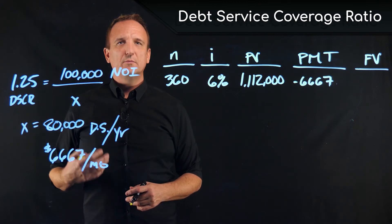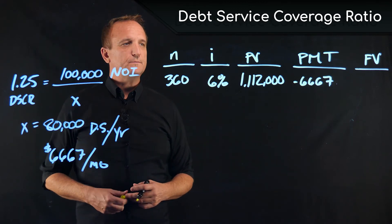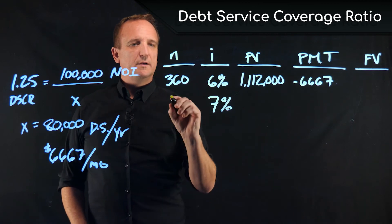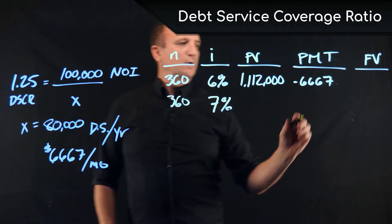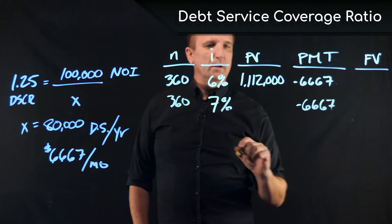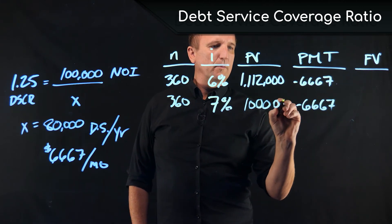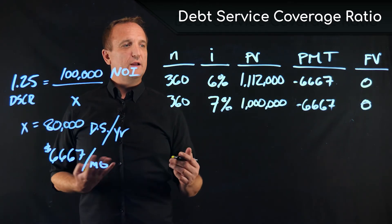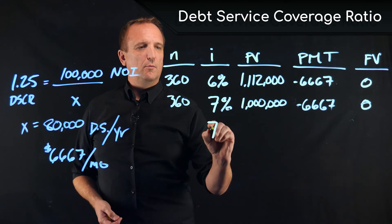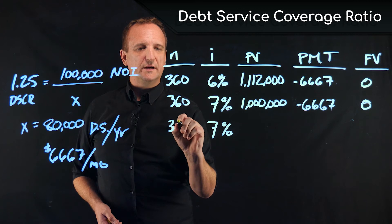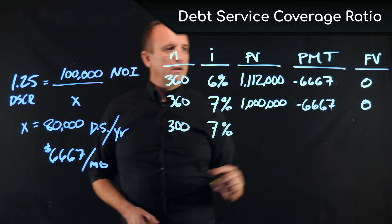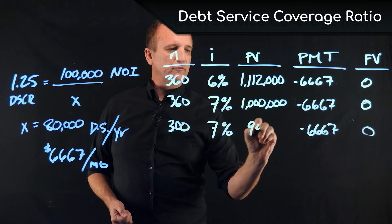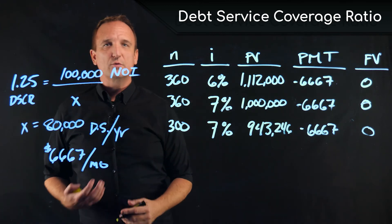If our net operating income is fixed, our maximum loan payment is also fixed. If interest rates rise to 7%, still amortized over 30 years, with our payment still capped at $6,667, our maximum loan amount drops to $1,000,000. Similarly, if we still have a 7% interest rate but shorten the amortization to 25 years (300 months), our loan amount would be reduced even further to $943,000.